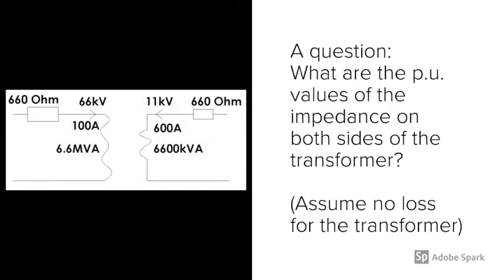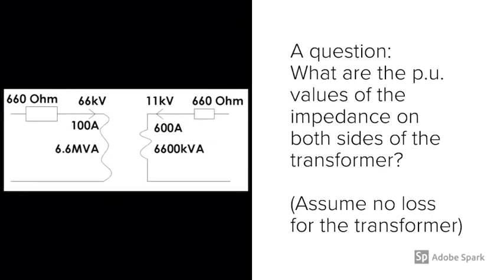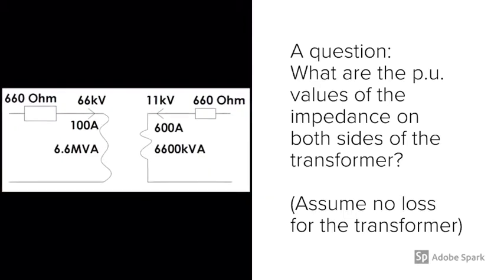What are the per unit values of the impedance on both sides of the transformer? Assume no loss for the transformer.